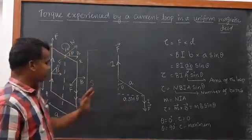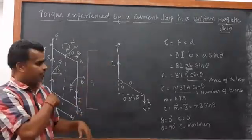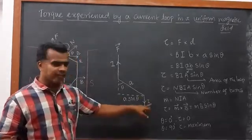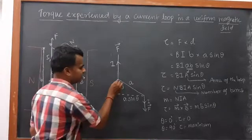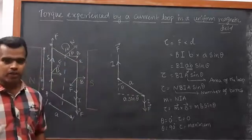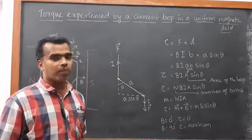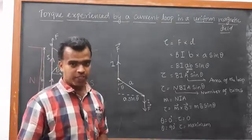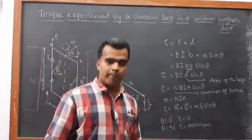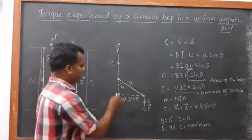In PQ the force is acting in the upward direction, and in RS the force is acting in the downward direction. Two equivalent forces acting in opposite directions form a couple, and due to the couple the torque is produced. Two equivalent forces opposite in direction form the couple.